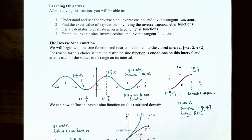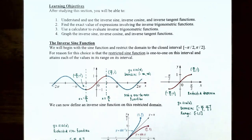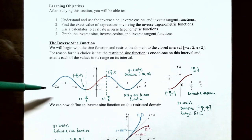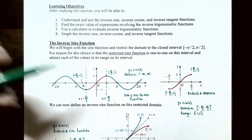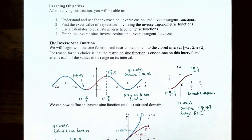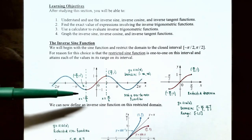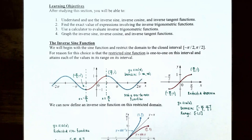We're going to begin with the sine function and restrict the domain to the closed interval from negative π/2 to positive π/2, including the endpoints. The reason for this choice is that the restricted sine function is now a one-to-one function on this interval and it attains every output value on this interval. This is the graph of y = sin(x), with domain all real numbers and range from negative 1 to 1 including the endpoints.